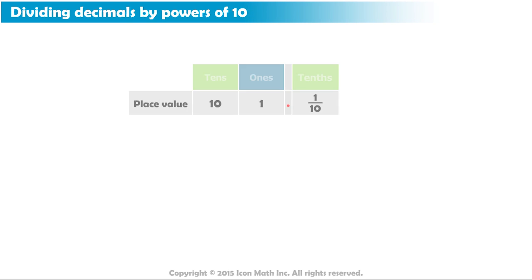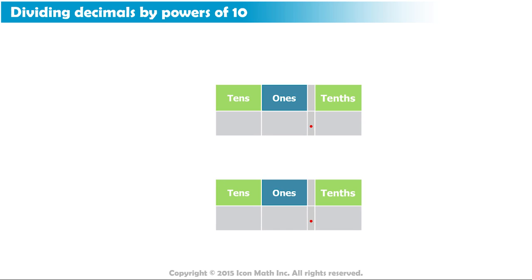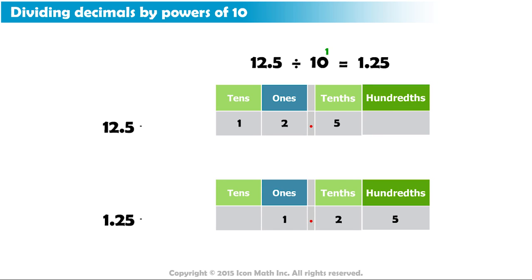So what happens here? Remember that a digit in one place represents 1 tenth as much as it represents in the place on its left. Dividing the value of a digit by 10 is the same as multiplying it by 1 tenth. If we look at the chart for both numbers, we can observe the following.